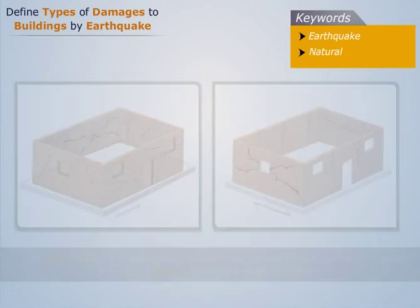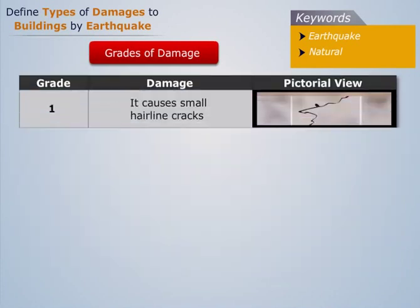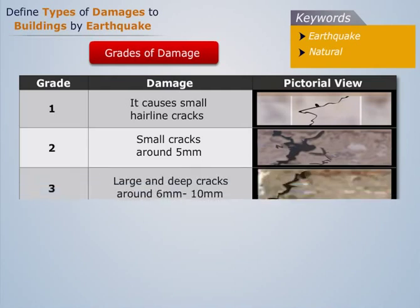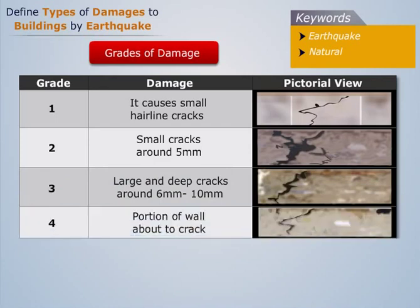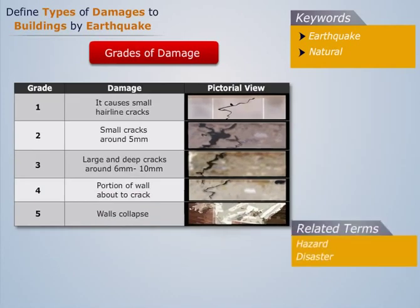According to structural damages, earthquakes are classified into five categories. Grade 1 earthquake causes small hairline fractures. Grade 2 earthquakes cause small cracks of around 5 millimeters. Grade 3 earthquakes cause large and deep cracks of 6 millimeters to 10 millimeters. Grade 4 earthquakes make a portion of wall collapse. Grade 5 earthquakes make the walls collapse.